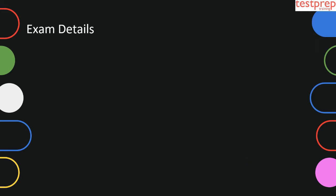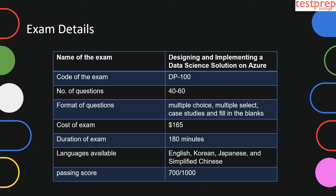Now let's discuss the exam details. Name of the exam: Designing and Implementing a Data Science Solution on Azure. Code: DP100. It has 40 to 60 questions. The format of questions includes multiple choice, multiple select, case studies, and fill in the blanks. It costs around $165. Duration of the exam is 180 minutes. Languages available are English, Korean, Japanese, and Simplified Chinese. Passing score is 700, on a scale of 1 to 1000.